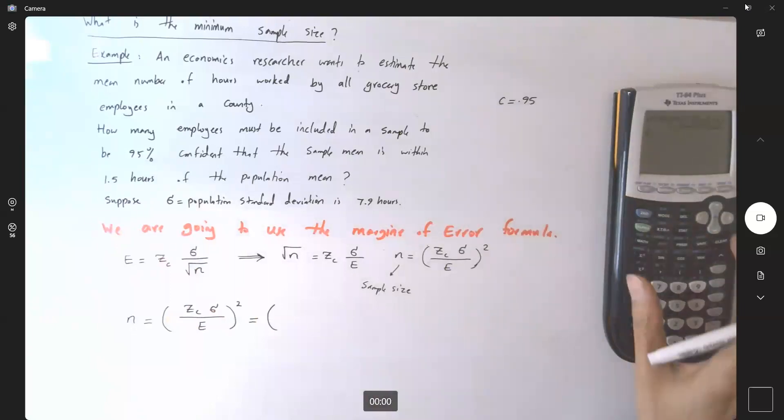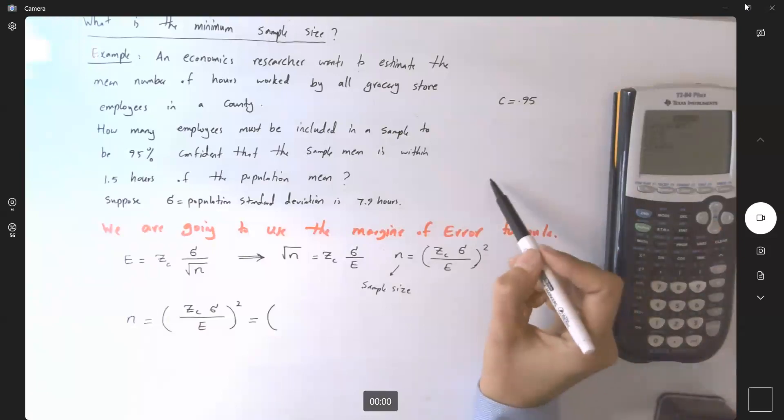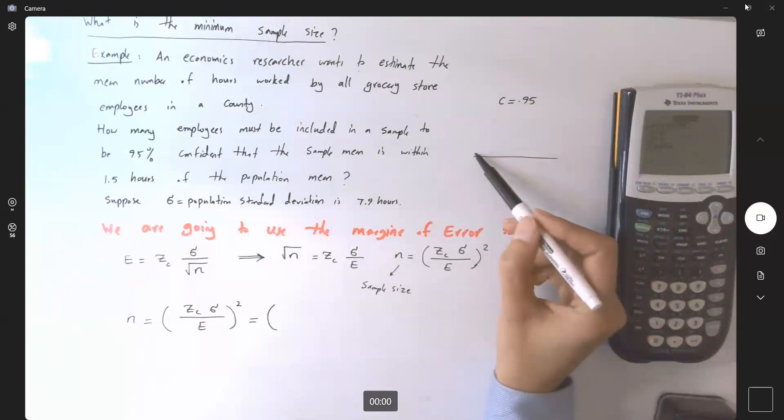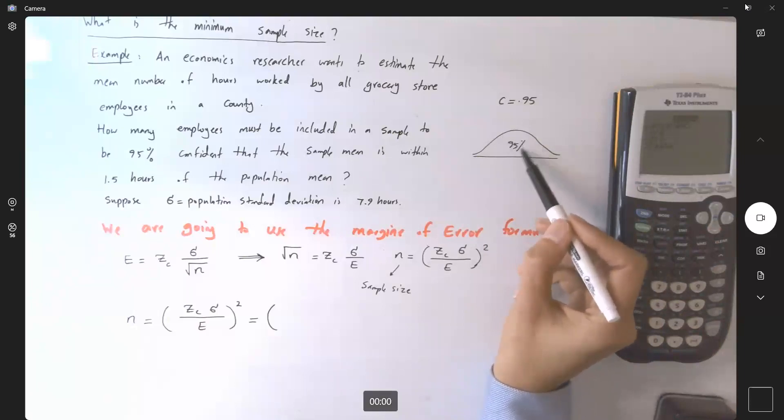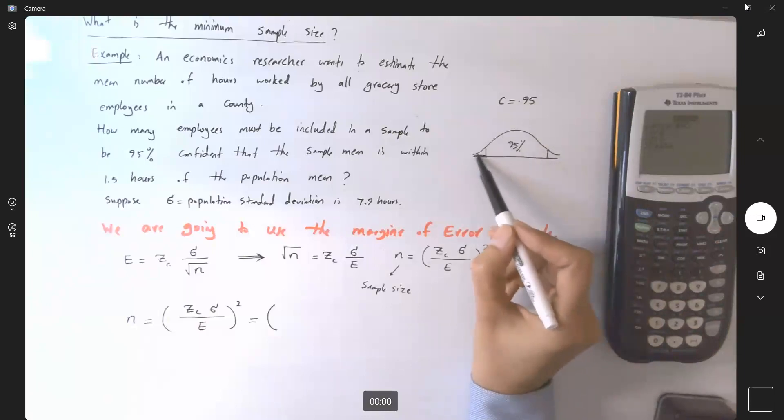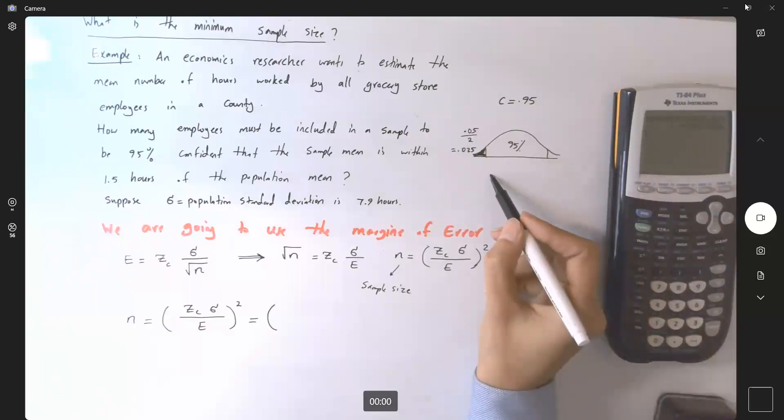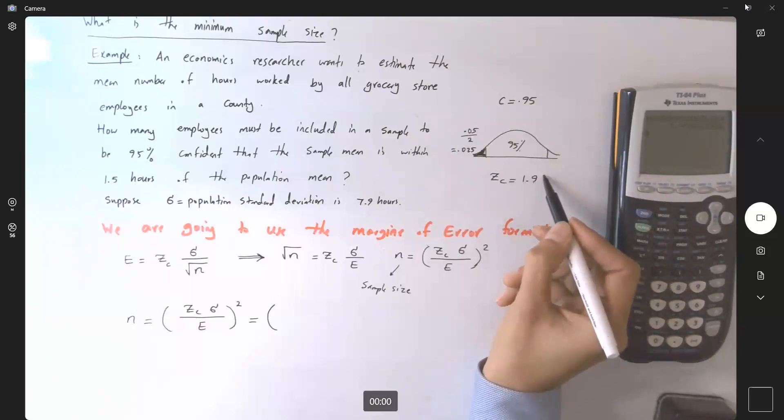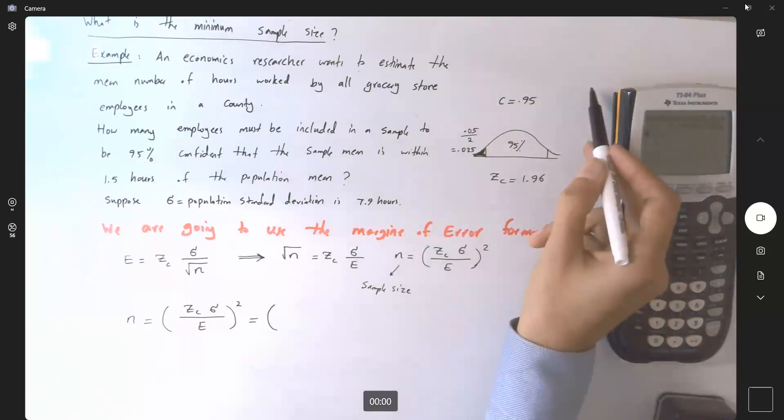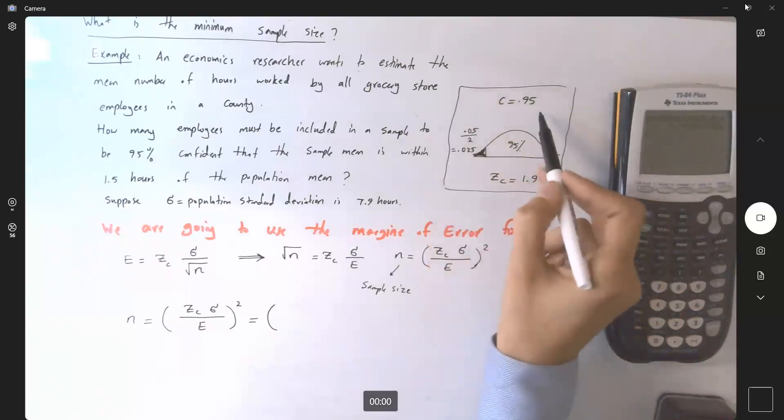turn on your calculator. Second, vars, find inverse norm. The area to the left, here you have 95%. This leftover area is 5% divided by 2, 0.05 divided by 2 or 0.025. 0.025, mean 0, standard deviation is 1, and then your zc is going to be positive 1.96. That's how we get our critical value for the confidence level of 95% or 0.95.